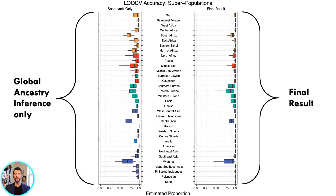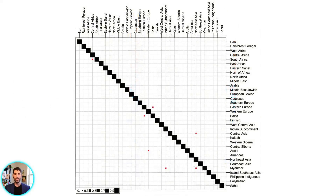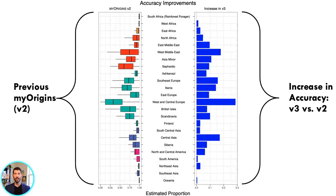The pipeline works quite well. Overall, populations are assigned with a mean accuracy of 89%, and superpopulations are assigned with a mean accuracy of 96%. You can see how most of the bars are on the right side of each plot. In the confusion matrix plot, samples correctly assigned to their group are shown in black on the diagonal, while misassigned samples are shown in red off the diagonal — again, 96% accuracy at the superpopulation level. In many cases, the accuracy of MyOrigins 3 is about 10% better than MyOrigins 2, and nearly 30% better in one case.